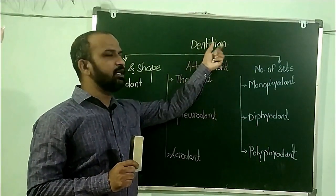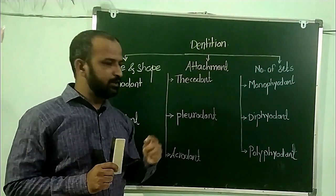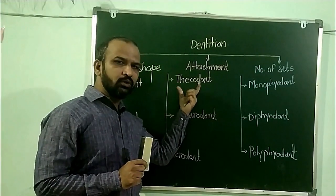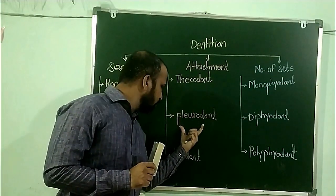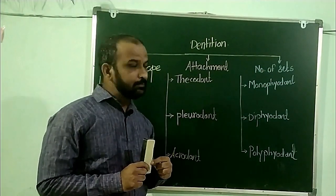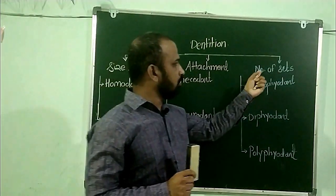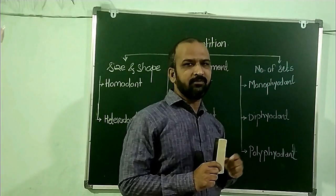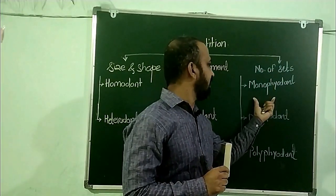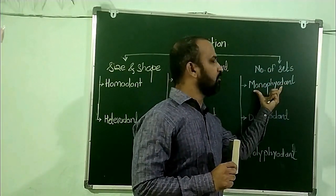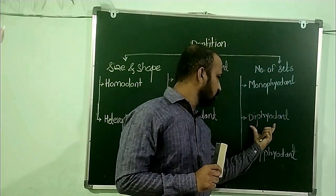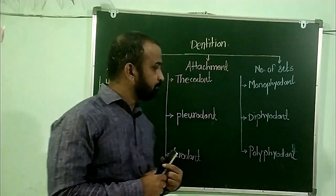On the basis of attachment, dentition is classified into three types: Thecodont, Pleurodont, and Acrodont. On the basis of number of sets, the dentition is classified as Monophyodont, Diphyodont, and Polyphyodont.